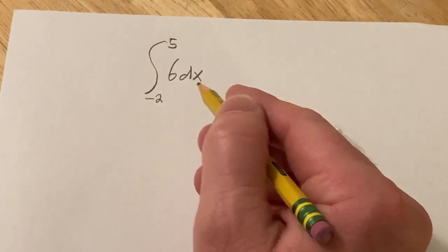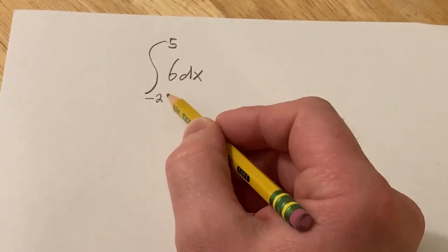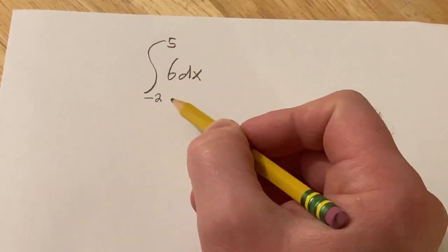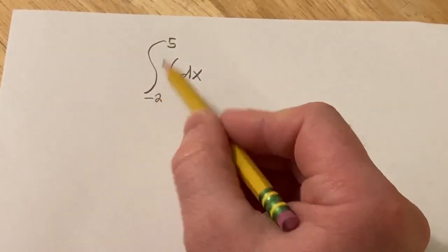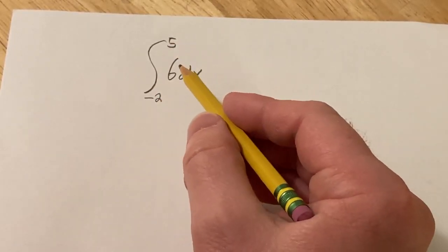In this problem we have to integrate 6 with respect to x and we're going from negative 2 to 5. So this is called a definite integral and you know that because you have these numbers here. These are the limits of integration.